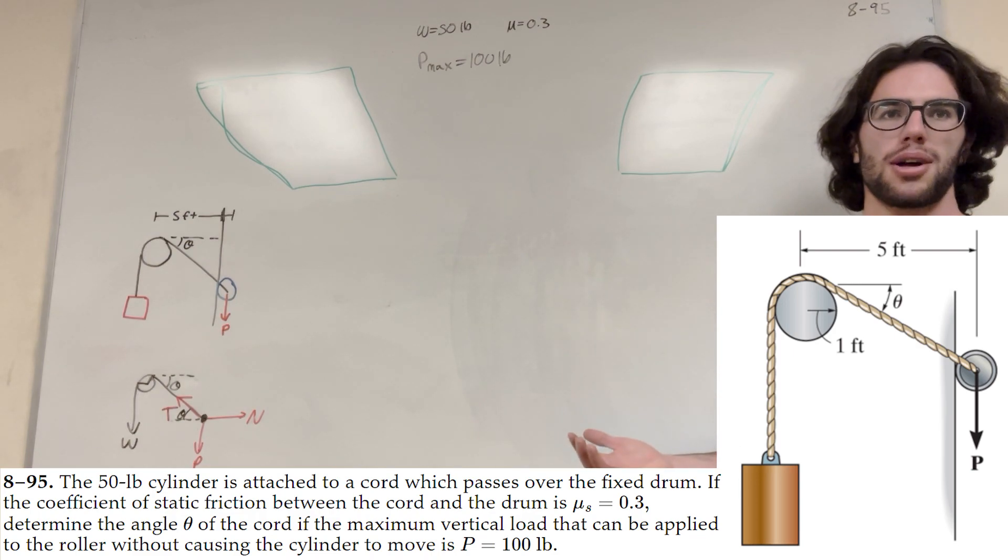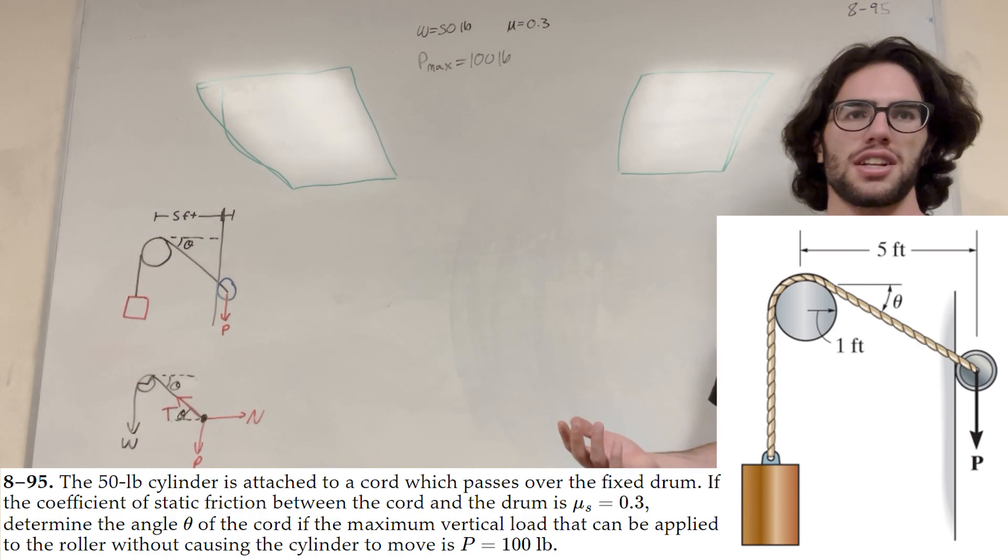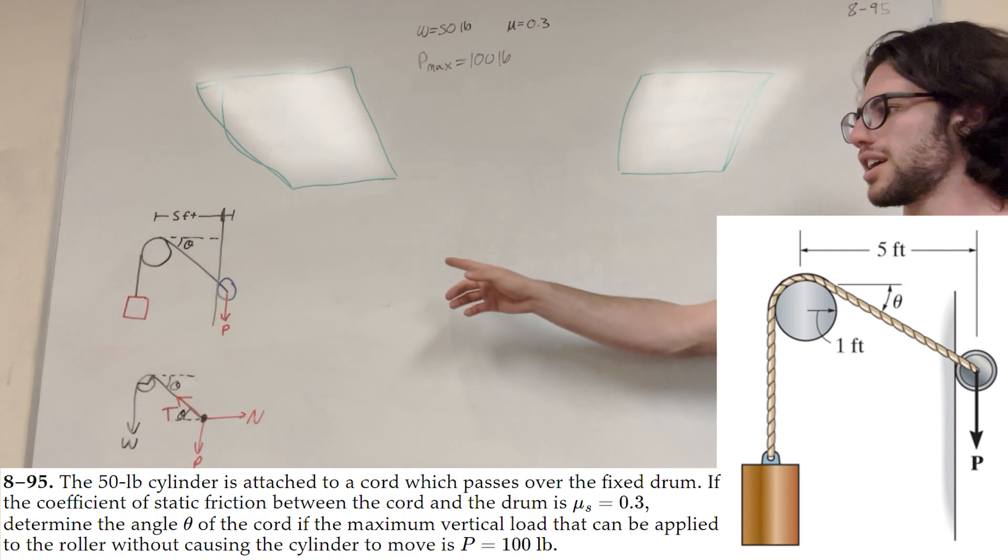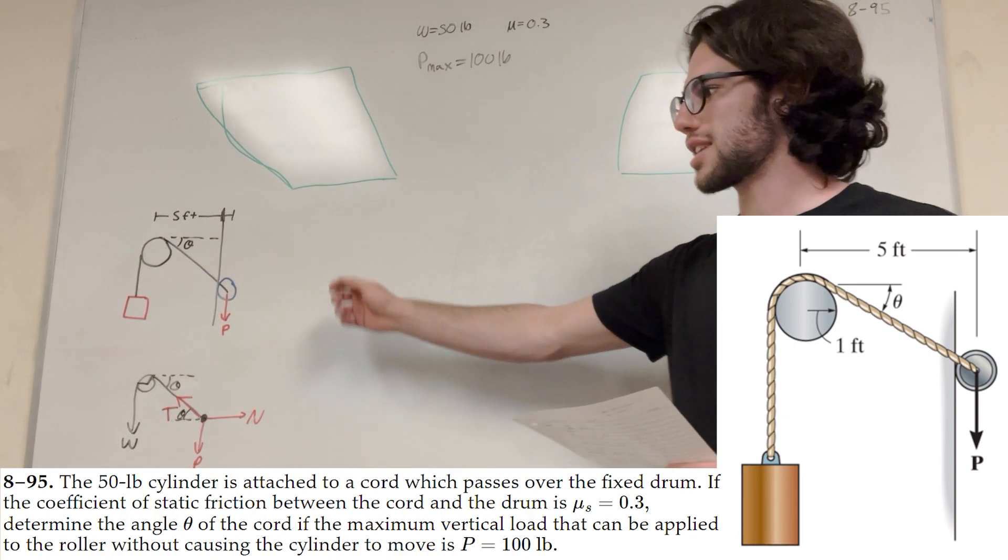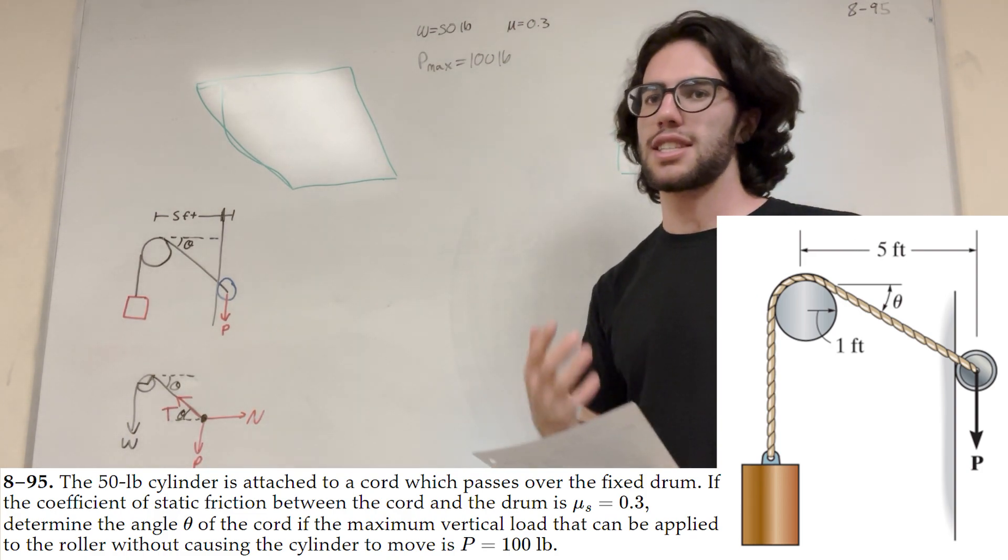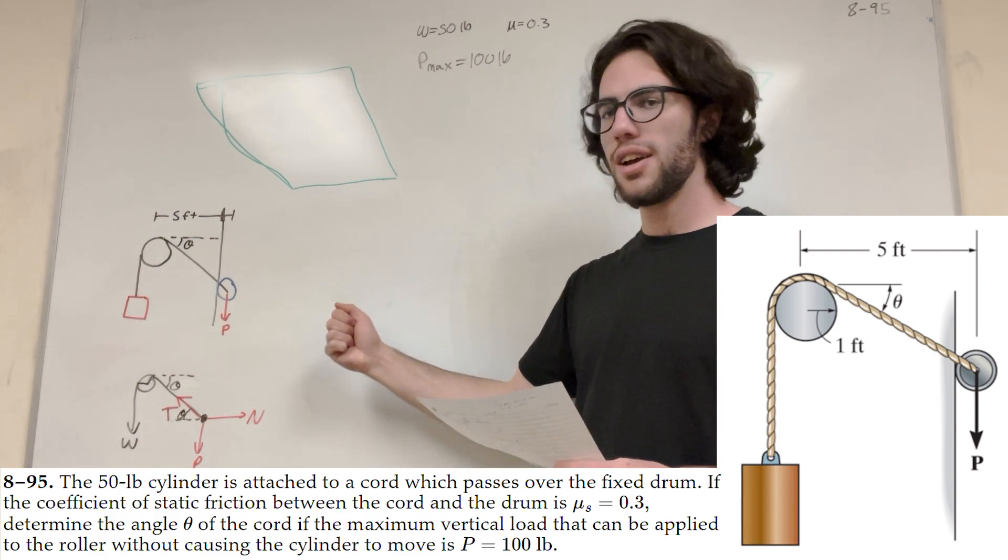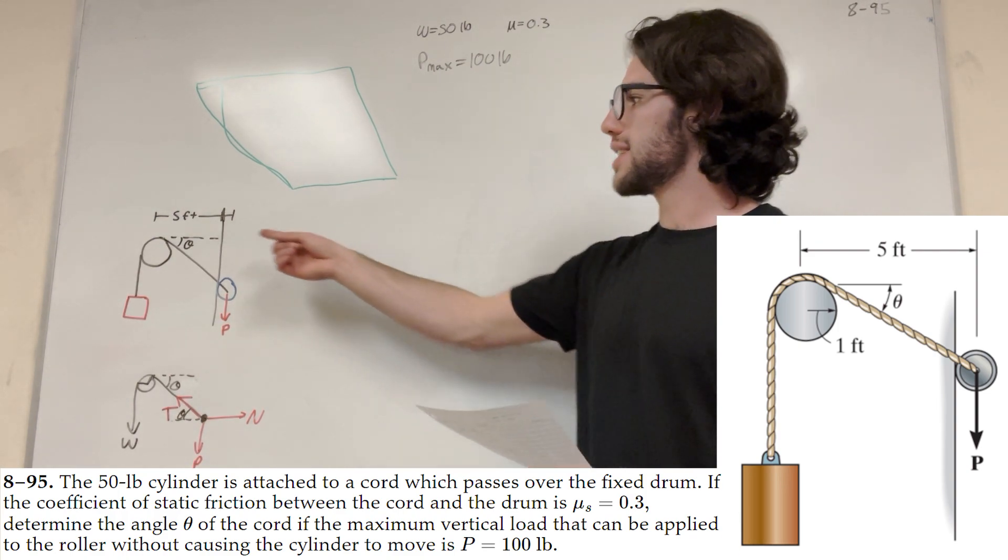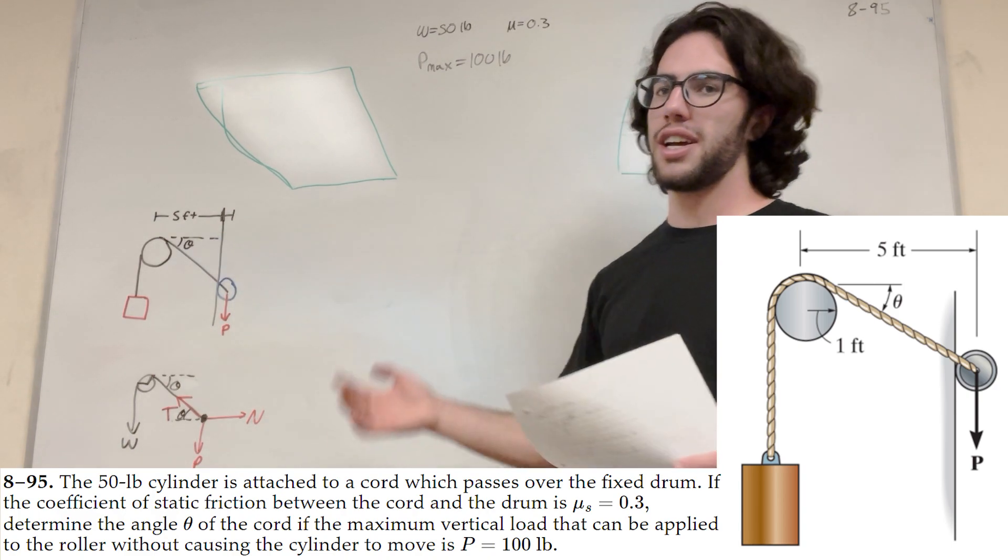What's up, Cal gang? Alright, so we got the statics problem here. So we got this 50 pound cylinder and it's attached to a barrel and it's attached to a roller which has a force P applied to it. So that P is 100 pounds and that tells us that it's the maximum force that you can apply for the system to stay at equilibrium. So what we're trying to find is this theta here. What is the degree at that angle?